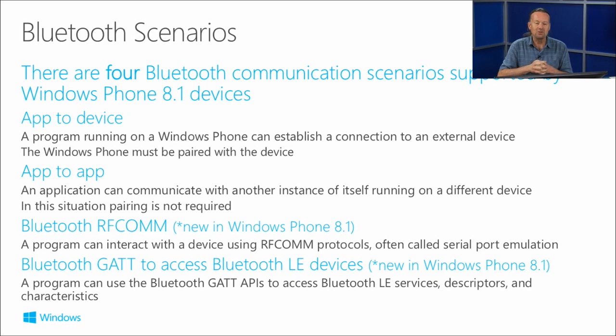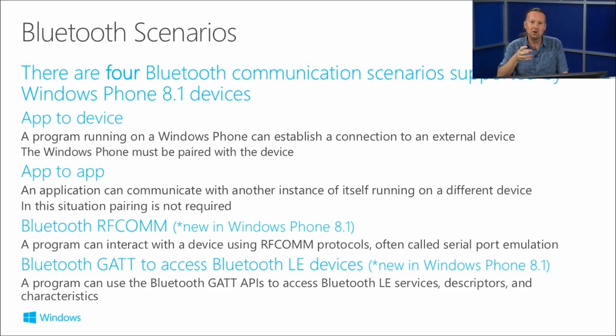Then we've got two new ones in Windows Phone 8.1. First of all we've got Bluetooth RFComm, which is often called serial port emulation. RFComm is that cable replacement - which was kind of the early promise of Bluetooth, that it was going to get rid of all these cables you used to plug everything in. So RFComm is supported, and Bluetooth GATT to access Bluetooth LE devices. This is actually the most exciting one of all of these.